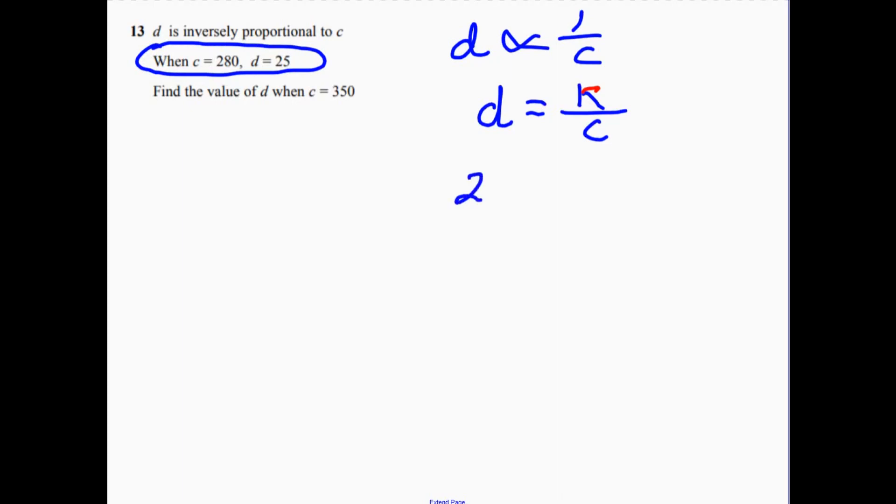So if I just substitute these things in, so I've got 25 equals K over 280. So if I multiply these guys together, we'll get what K is. So K is equal to 7,000. So now if we write this out again,